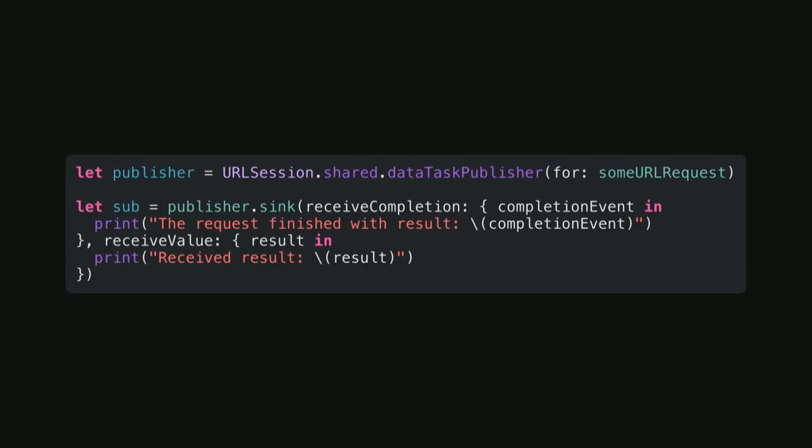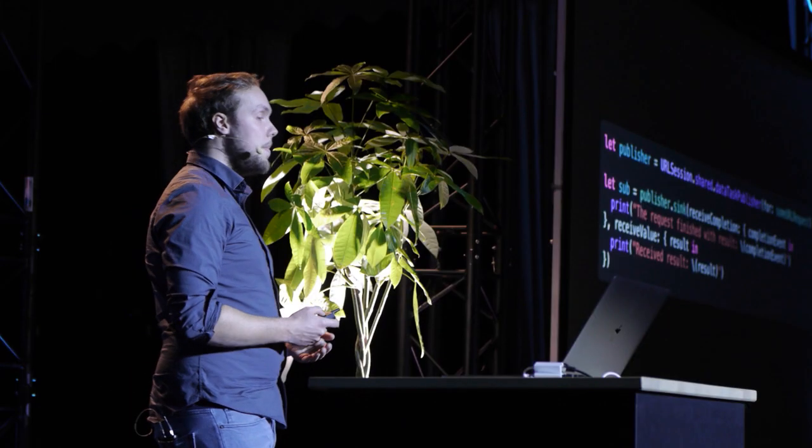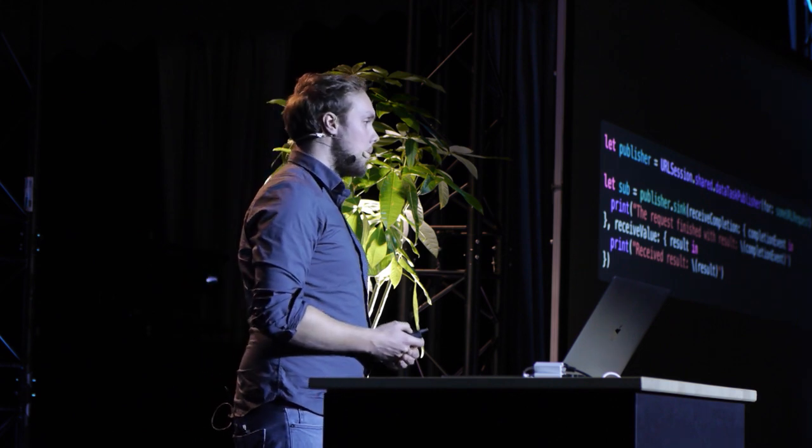We can do that with a Sink. A Sink is a kind of subscriber which allows us to receive values from a publisher. Sink takes two closures: one that's called when a publisher completes — after it has emitted its final value — and the other is called whenever a publisher emits a value, so in this case that would be the result of our URL request.